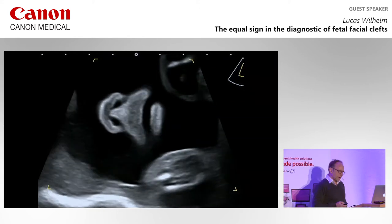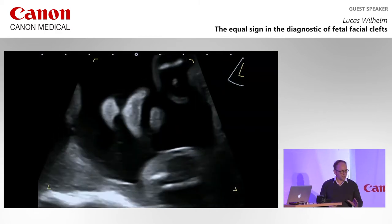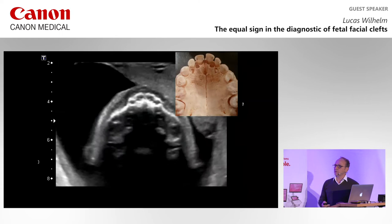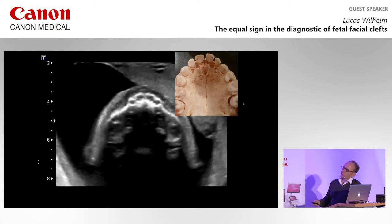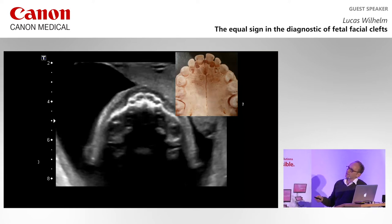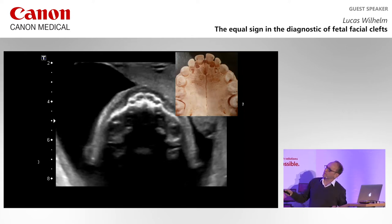When you find a cleft lip, the next step has to be the assessment of the alveolus. For this, you have to get an axial plane — you see here the alveolar ridge with the alveolar cavities. Inside the foramen, you see the fusion lines between the incisors and the canine teeth. This whole segment with the median part of the lip and the incisors is called the pre-maxilla, which is the primary palate. The incisor foramen is the border between the primary and the secondary palate.